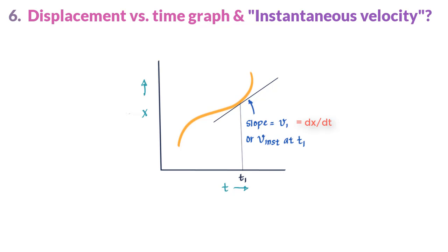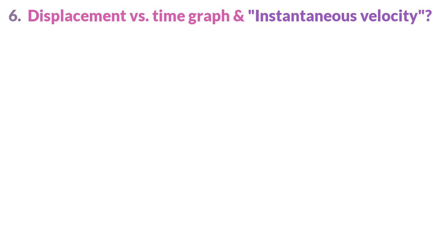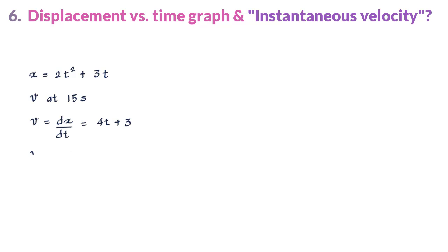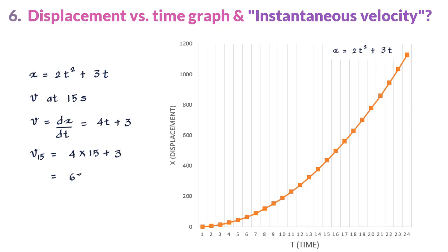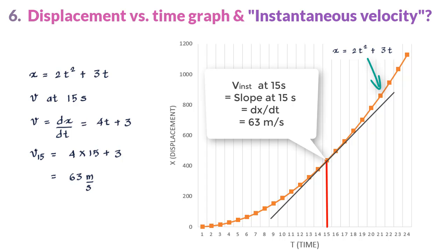For example, if displacement x equals 2t² plus 3t and you are asked to find the velocity at t equals 15 seconds, you first find dx/dt equals 4t plus 3, then substitute t equals 15 to get v equals 63 meters per second. This is also the slope of the x-t curve at t equals 15 seconds. If you take the magnitude of velocity at any instant, that gives the speed at that point.